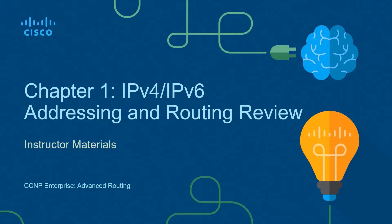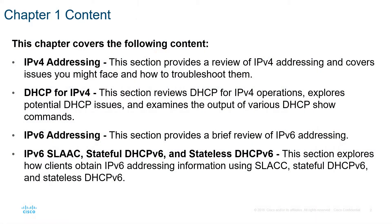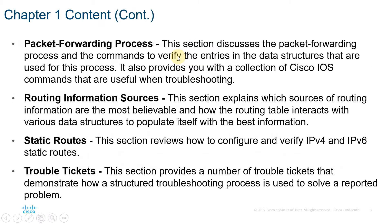Hi, hello there. Welcome to IPv4 and IPv6 Addressing and Routing Review. This is Chapter 1 of the CCNP Enterprise Advanced Routing. Chapter 1 covers the following content: IPv4 Addressing, DHCP for IPv4, IPv6 Addressing, IPv6 SLAAC, Stateful DHCPv6, and Stateless DHCPv6. Also included are Packet Forwarding Process, Routing Information Sources, Static Routes, and Trouble Tickets. This Chapter 1 is just a review of what you've learned from the previous CCNA. Let's get started.